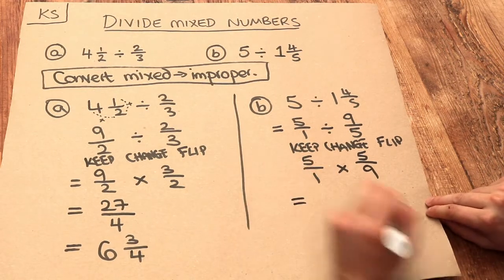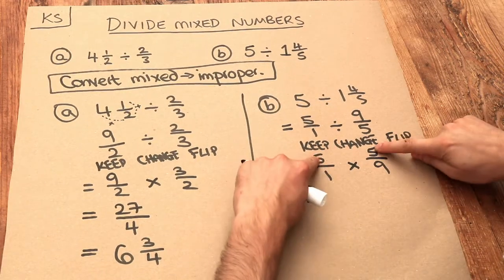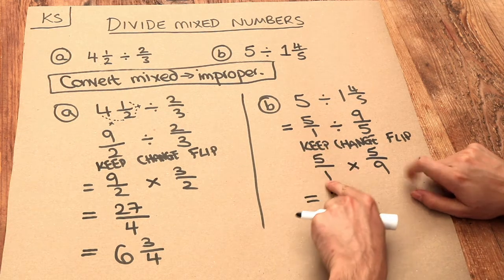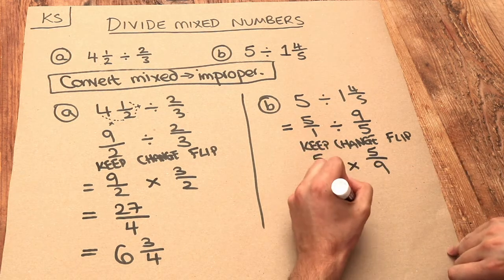And then we can just multiply these two fractions together by multiplying the numerators: 5 times 5 is 25, and multiplying the denominators: 1 times 9 is 9.